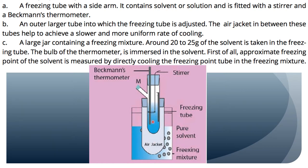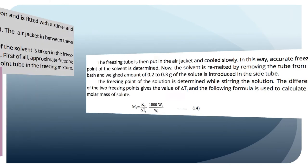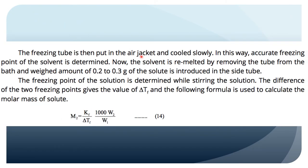The bulb of the thermometer must be immersed in the solvent. First, the approximate freezing point of the solvent is measured by directly cooling the freezing tube in the freezing mixture. Then we place the freezing tube inside the air jacket and cool it slowly to determine the accurate freezing point of the solvent.